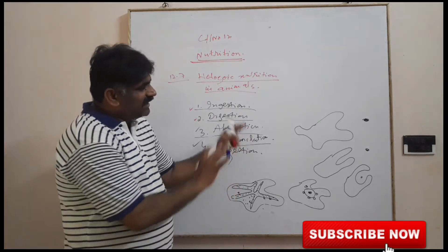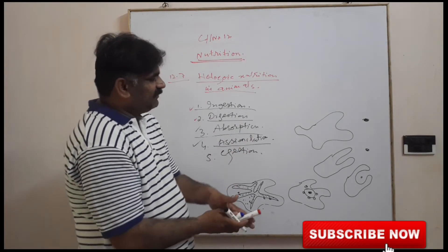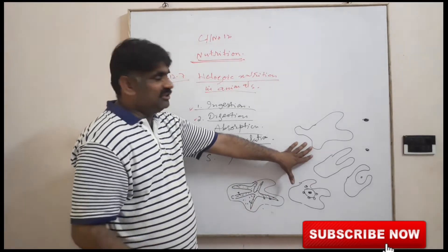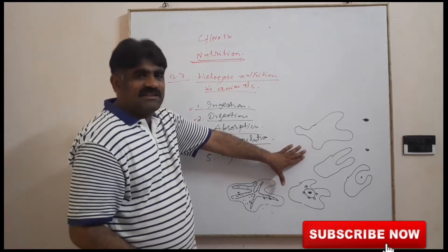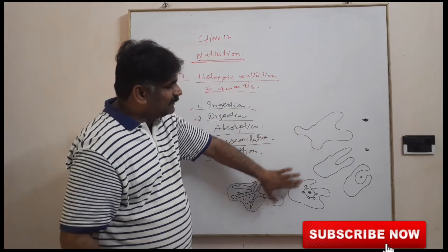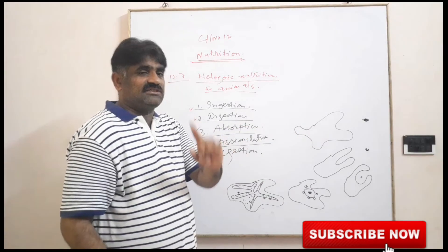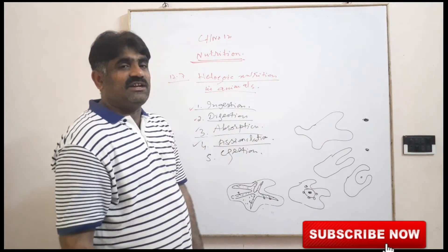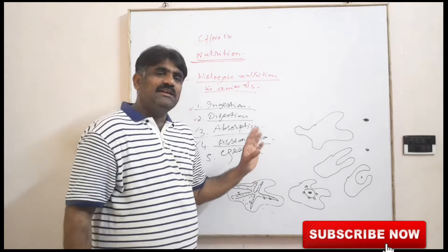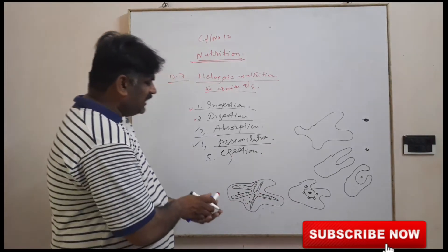Overall, amoeba is a one-cell structure, so there is no other cell. All digestion steps take place inside the cell. This is called intracellular digestion. Amoeba performs only intracellular digestion.